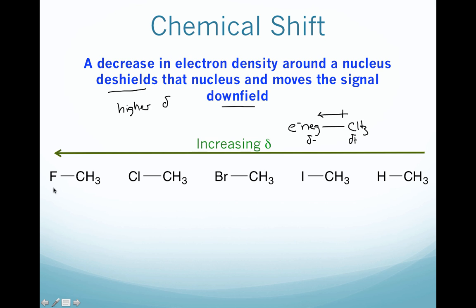Looking at this series going from methane all the way to fluoromethane, we're increasing in chemical shift. The four protons of methane have no electronegative atom, so they're extremely far upfield at around 0.23 parts per million. Of the halogens, iodide is the least electronegative but still has a pretty strong effect, so those protons show up at 2.2. Just by adding that electronegative atom, we've deshielded those protons substantially.